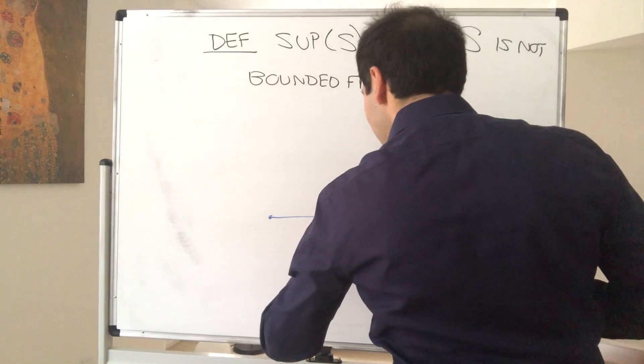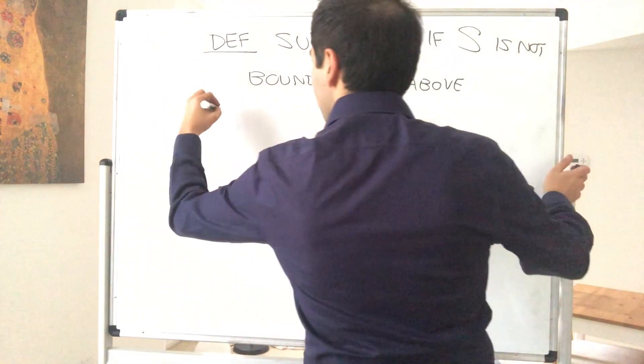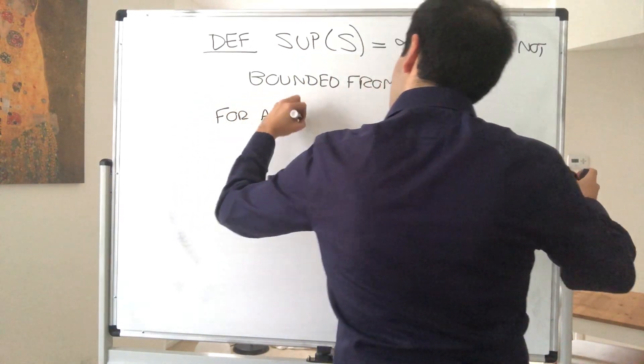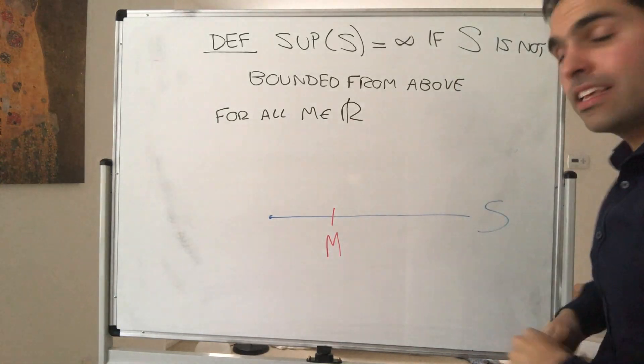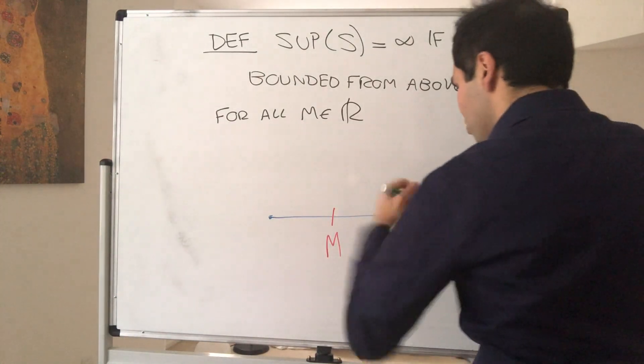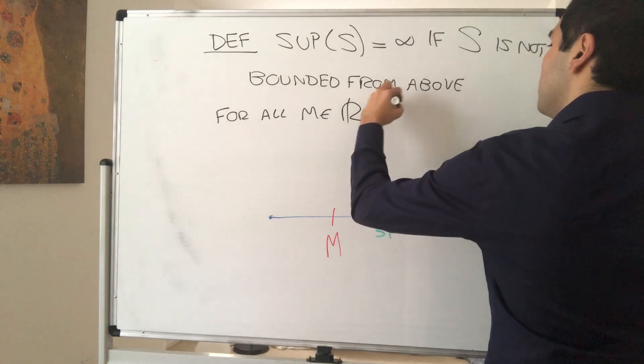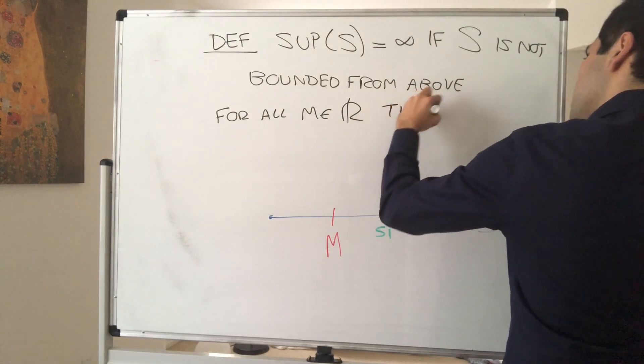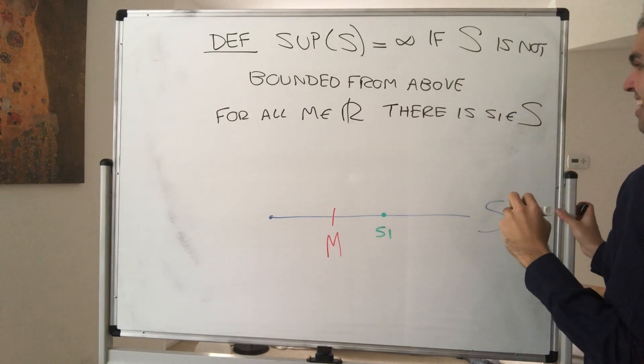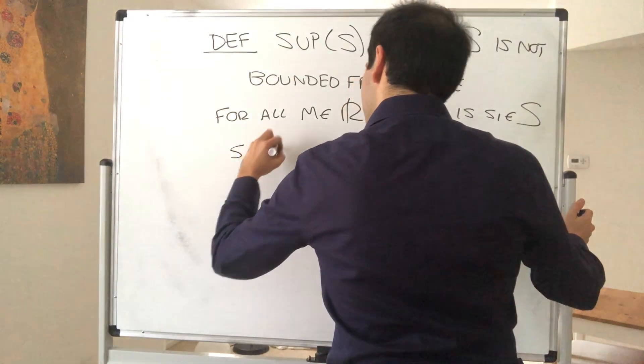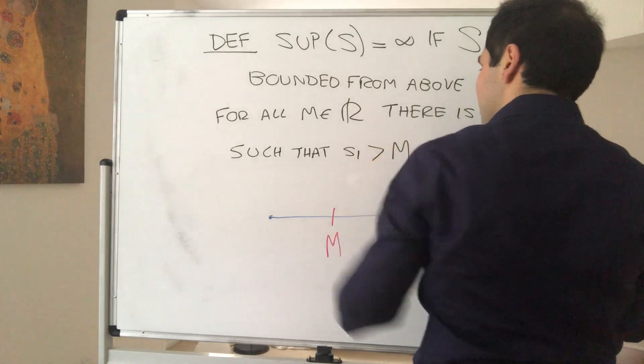If I give you any huge number M, so for all M in R, I can always find a bigger element of S. In other words, there is s1 in your set that is bigger than M. There is s1 in S. Again, it's important that it's an element of S such that s1 is strictly bigger than M.